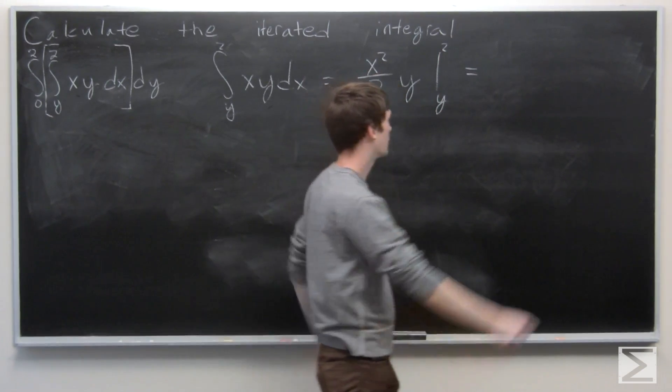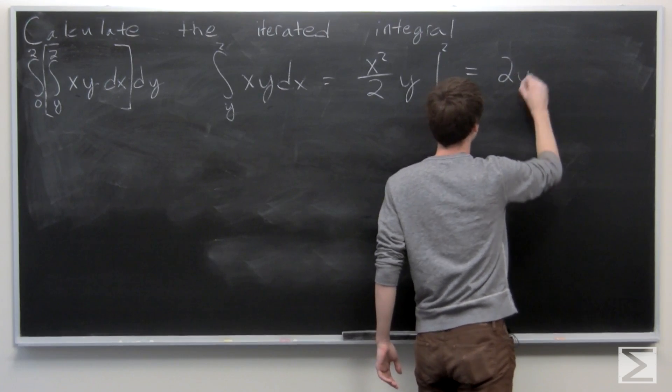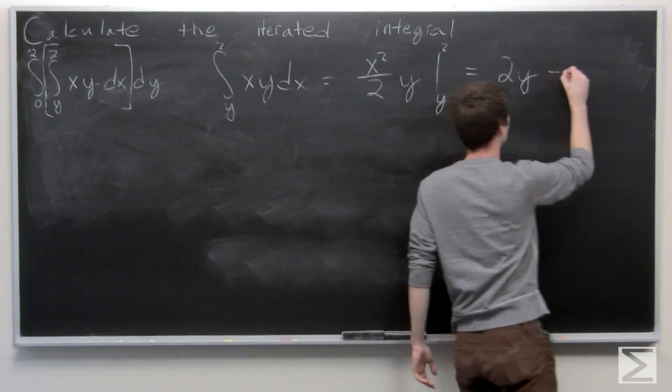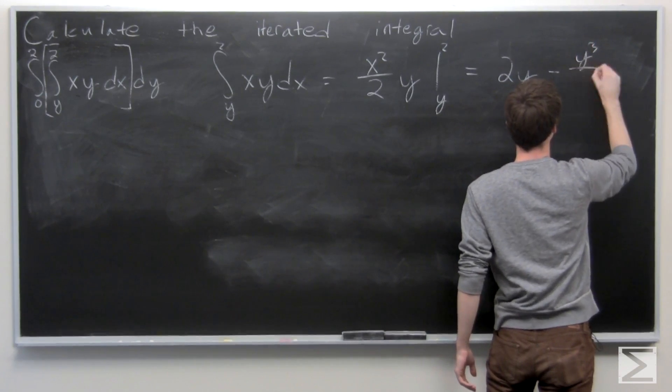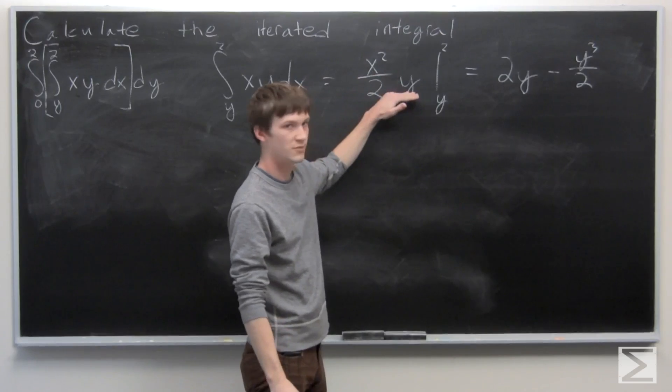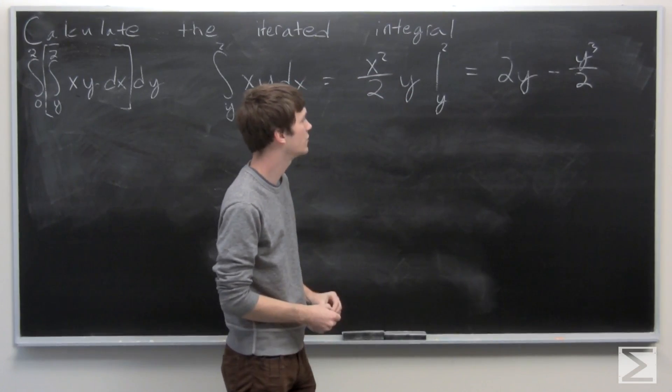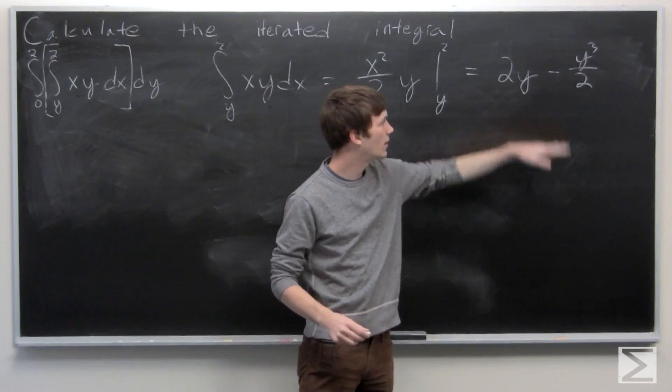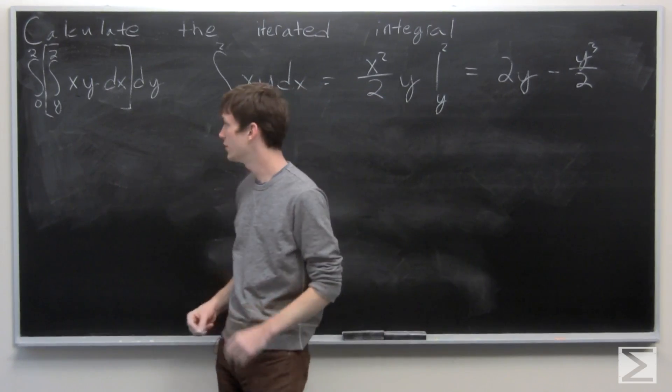So we get 2y minus y squared times y is y cubed over 2. So we have our first integral evaluates to 2y minus y cubed over 2.